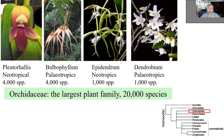Then we go to Asparagales, where we have orchids as the largest plant family globally with 20,000 species. Half of that belongs to four genera with extreme speciation: Pleurothallis, Bulbophyllum, Epidendrum, and Dendrobium. They are all epiphytic orchids in tropical forests.